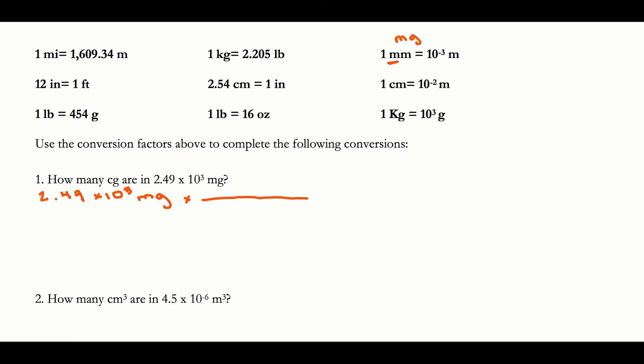I tell you that one milligram equals 10 to the negative third grams, and that one centigram is 10 to the negative second grams. I don't tell you the direct relationship between milligrams and centigrams, so I'm going to make this a two-step problem — going first from milligrams to grams by putting milligrams on the bottom and grams on top.